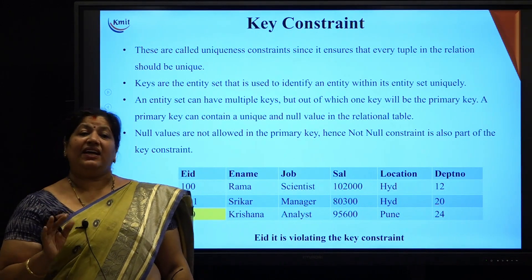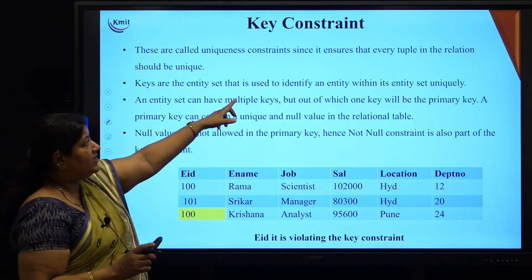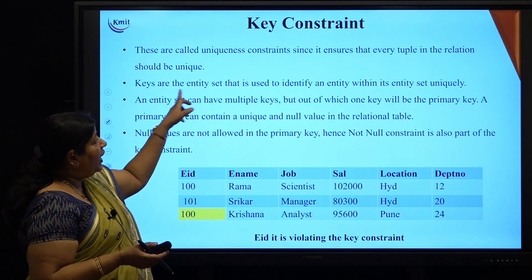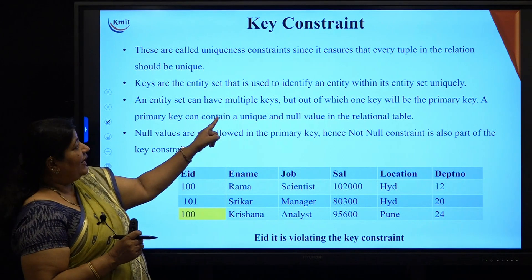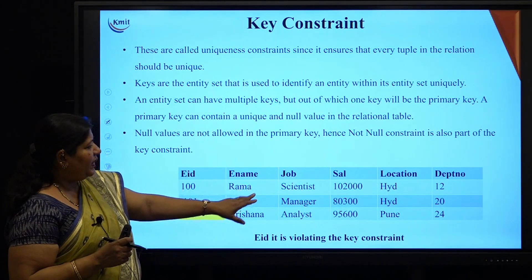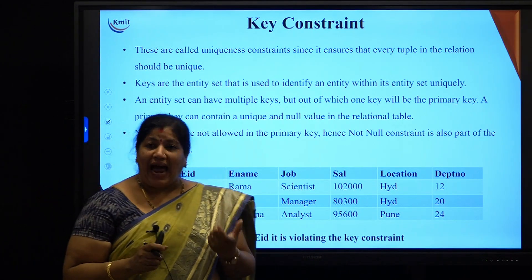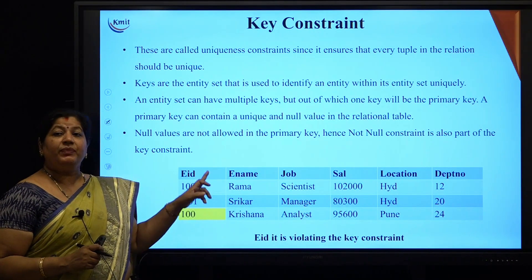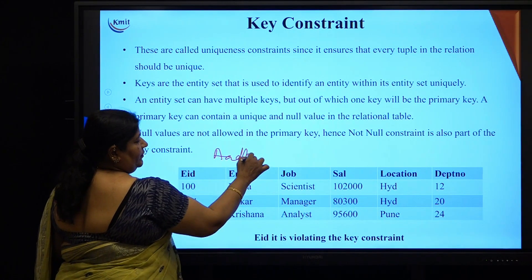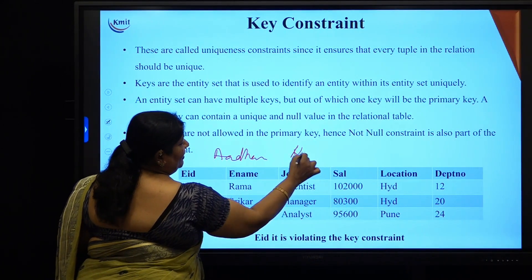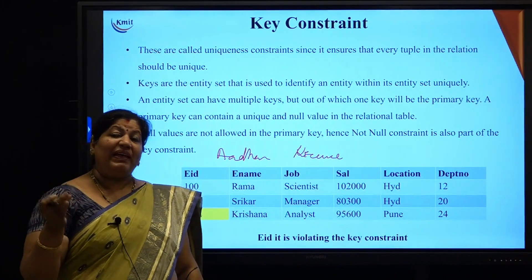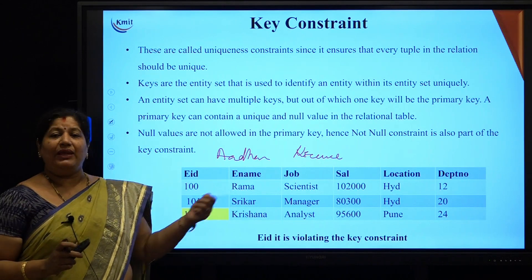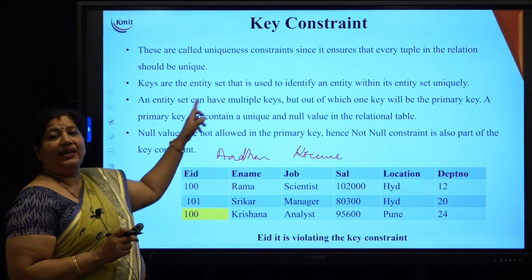Coming to key constraints, these are nothing but uniqueness constraints which ensure that every tuple in a relation is uniquely identified. An entity set can have multiple keys. For example, when storing employee details, the attributes which can uniquely identify that employee can be employee ID assigned by the organization, or Aadhar number, or driving license — any attribute where no other person will have that same value. Such attributes fall under the category of key constraints.